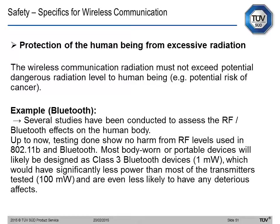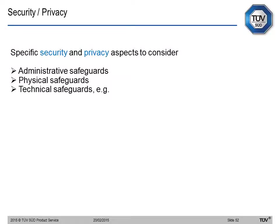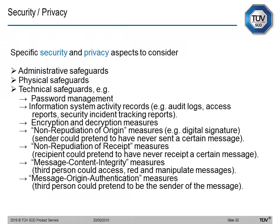Apart from safety, there is also security and privacy. Specific security and privacy measures must be considered: administrative safeguards, physical safeguards, and technical safeguards such as password management and information system activity records. In basic terms, we don't want a third person to access or manipulate messages — a good encryption and decryption measure must be put in place.